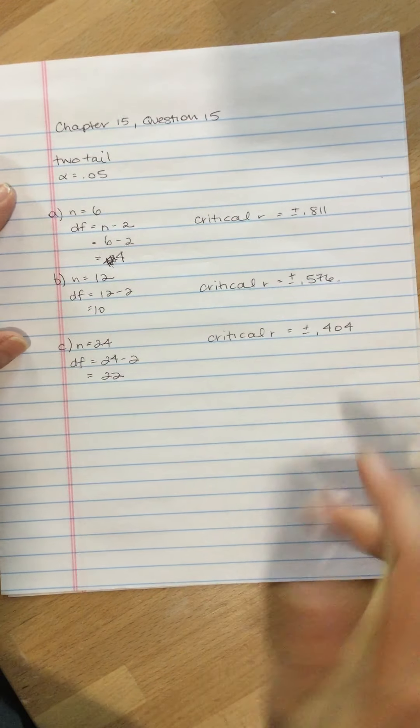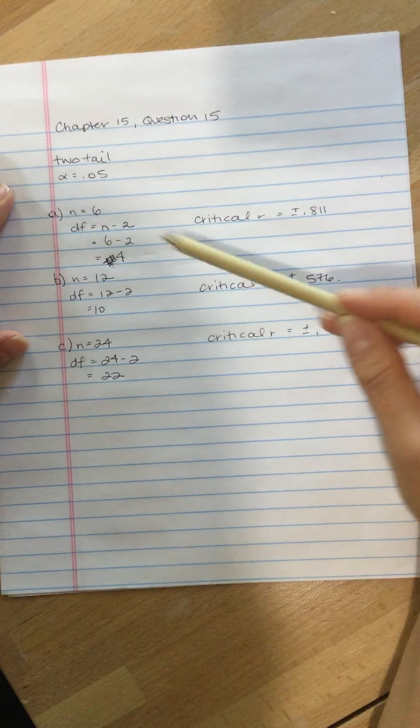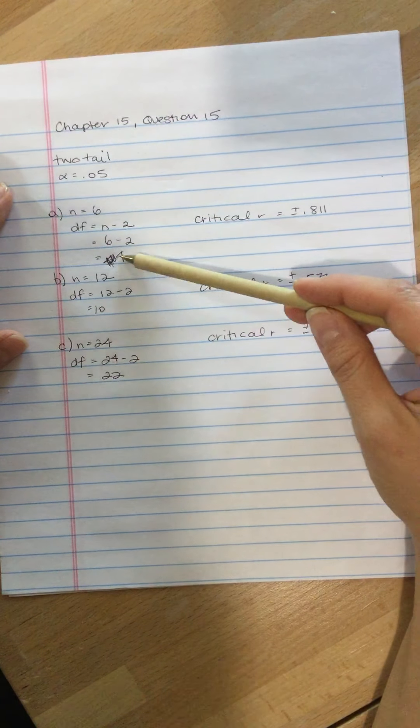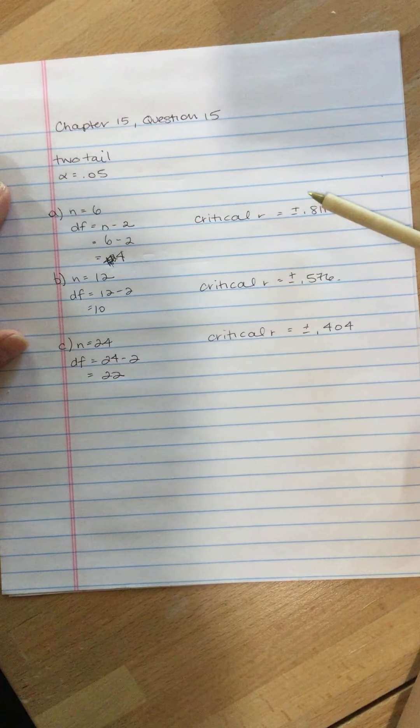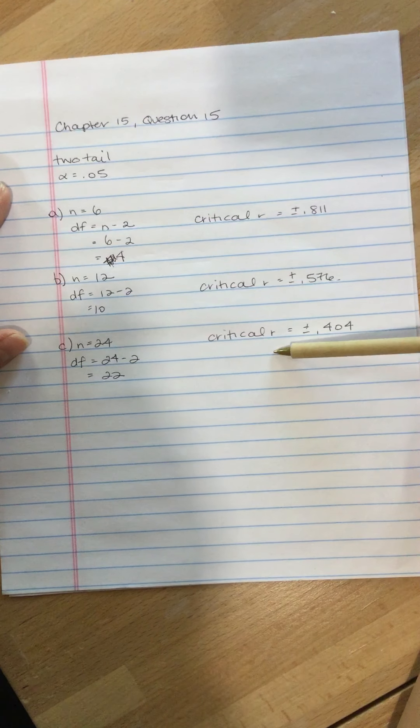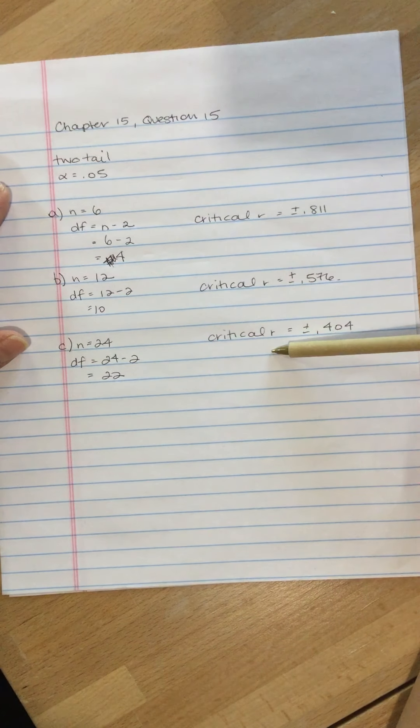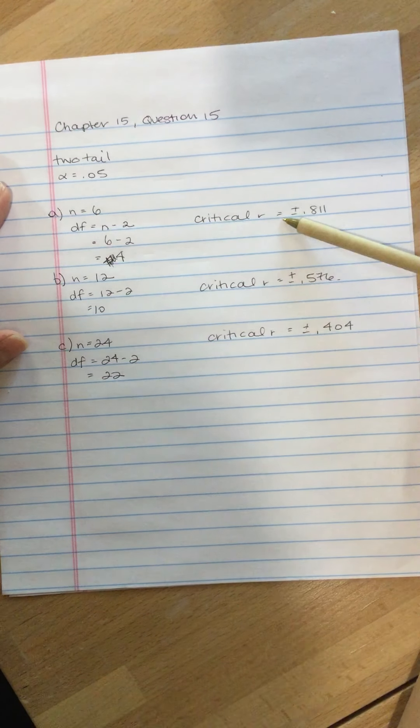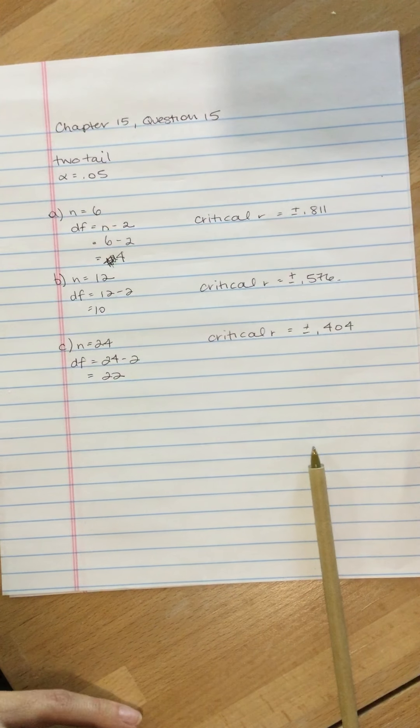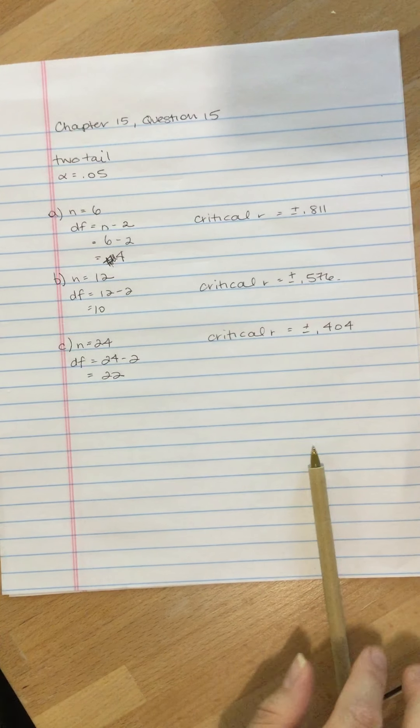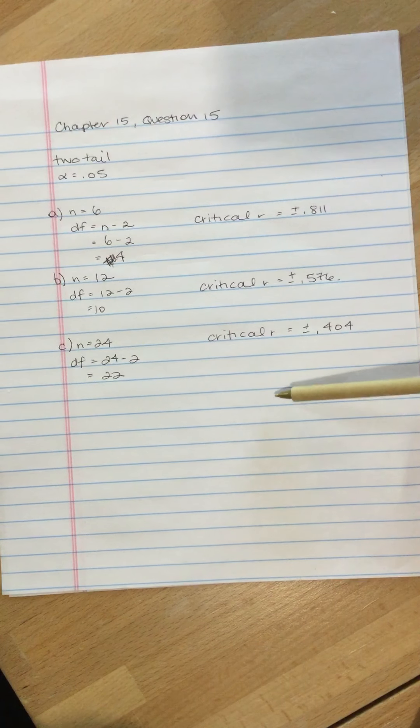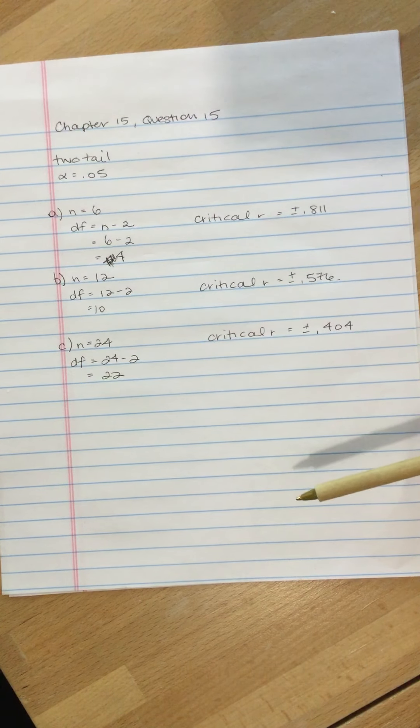It's not part of the question, but let's take a look at what happens as our degrees of freedom increases from 4 to 10 to 22. What happens to our critical R? The value that we need to calculate, the value that we need to be larger than in order to be statistically significant, gets smaller as our degrees of freedom increases.